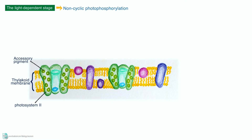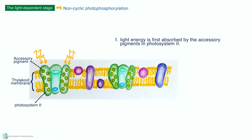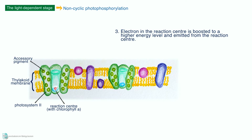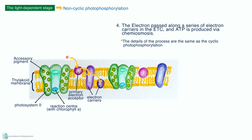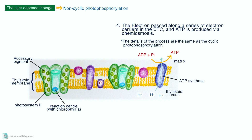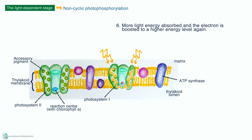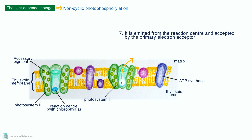In non-cyclic photophosphorylation, light energy is first absorbed by the pigments in photosystem II. The energy is transferred to the reaction center. The electron in the reaction center is boosted to a higher energy level and emitted from the reaction center. The electron passes along a series of electron carriers in the ETC, and ATP is produced by chemiosmosis. The electron is received by photosystem I — it does not go back to photosystem II. More light energy is absorbed and the electron is boosted to a higher energy level again. It is emitted from the reaction center and accepted by the primary electron acceptor.